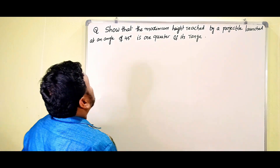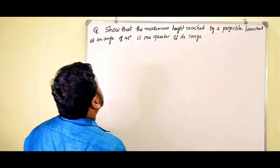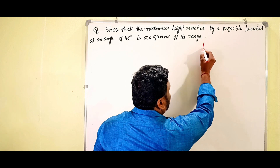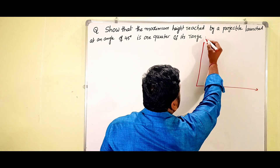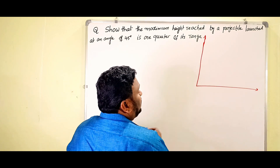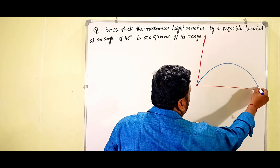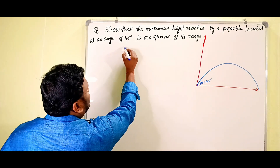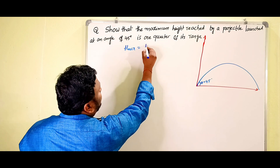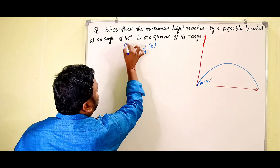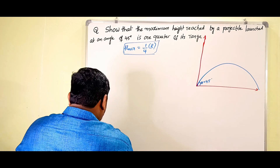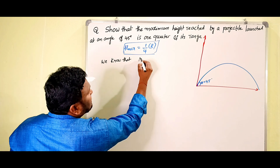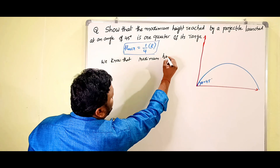Without further delay, let's go to the topic. The question is: show that the maximum height reached by a projectile launched at an angle of 45 degrees is one quarter of its range. So here a projectile is projected into the air at an angle of 45 degrees, and we have to prove that H_maximum is equal to one quarter of the range.